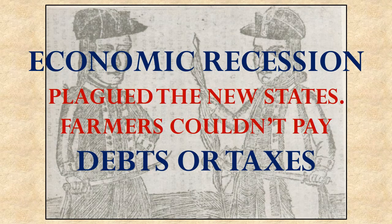The fourth problem under the Articles of Confederation was a product of the economic recession that was happening and plagued all these new states. As a personal result, it caused many farmers to fail in their businesses. Farmers go into debt almost every year as they buy seed for crops, then have to wait until the crops mature before selling them and getting their profit back.